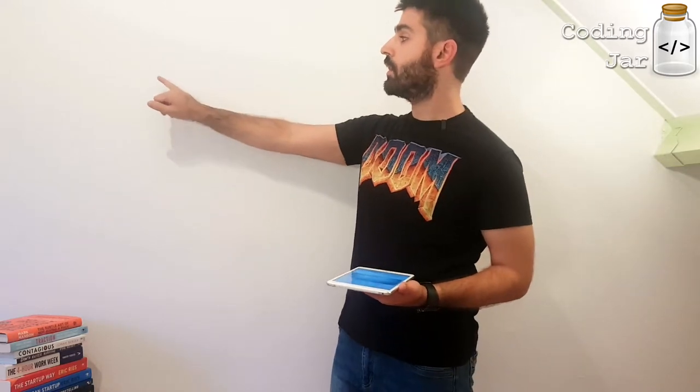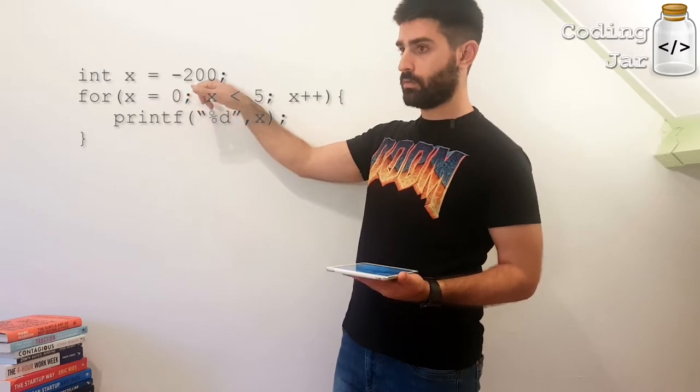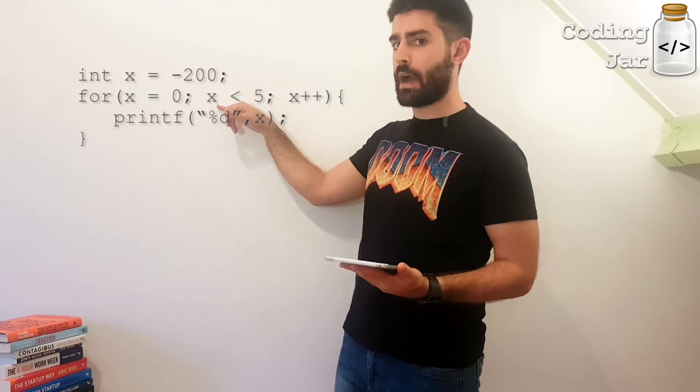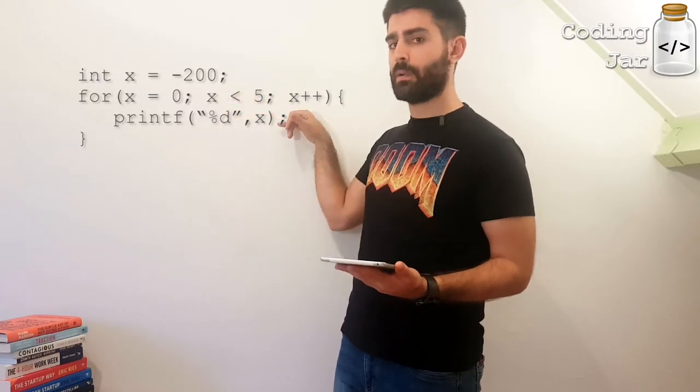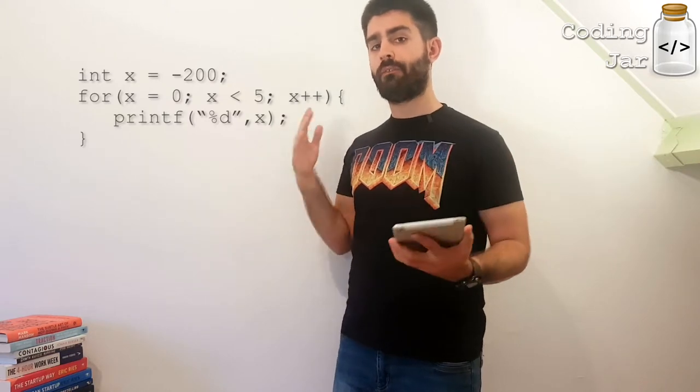A small trick I want you to remember is that if you want, let's say, the for statement to be executed five times, you would go and write it as this. For x equals 0, semicolon, while x is less than 5, colon, x++.